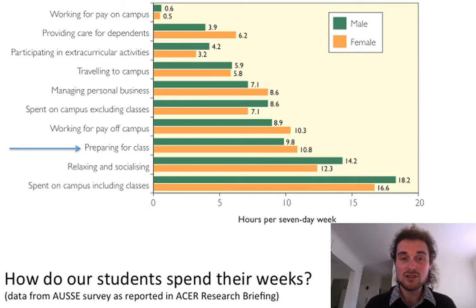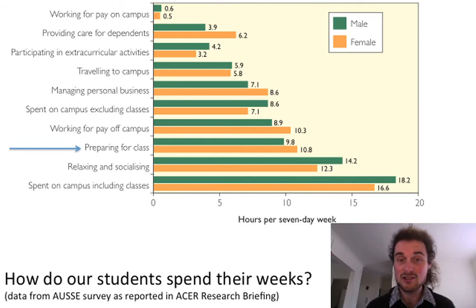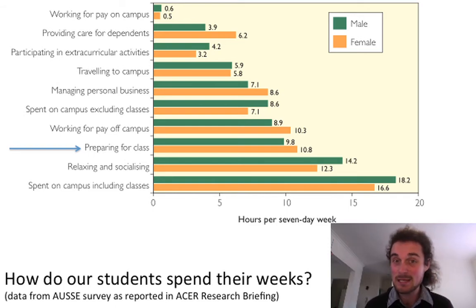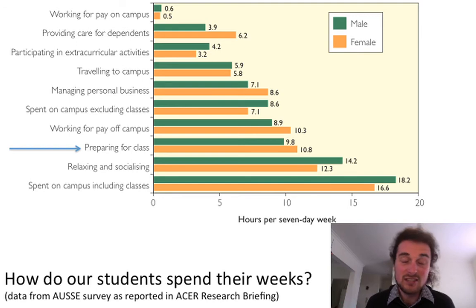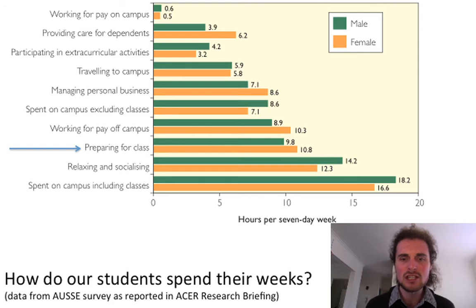Another idea is how do students spend their weeks? It can be surprising that they're spending roughly 10 hours per week outside of class working on all of their classes — not just your one class, but across all of their studies — about 10 hours total per week. So we don't have a lot of their time, and we must make really good use of that time.